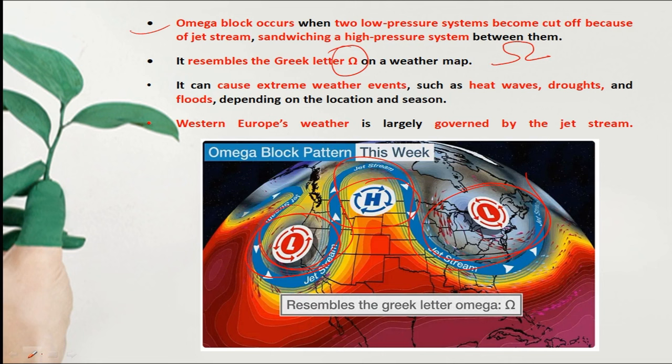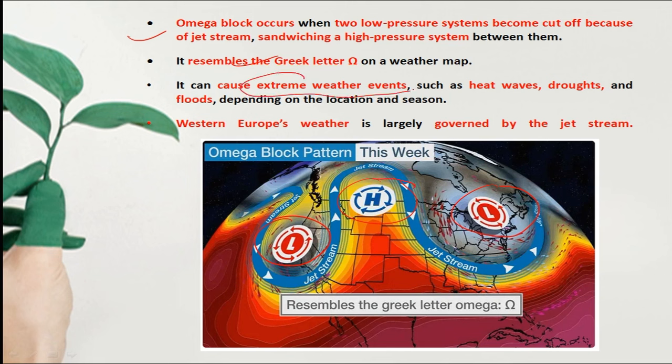When Omega Blocking occurs with two low pressure systems, there are extreme weather events such as heat waves, high temperatures, and flood conditions.